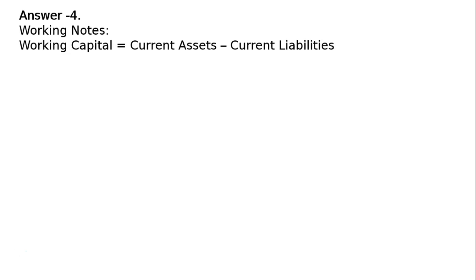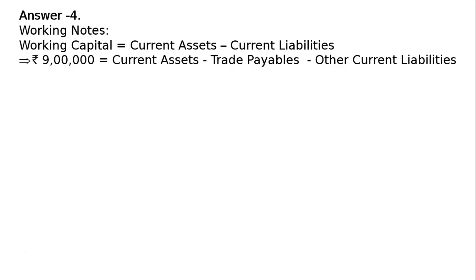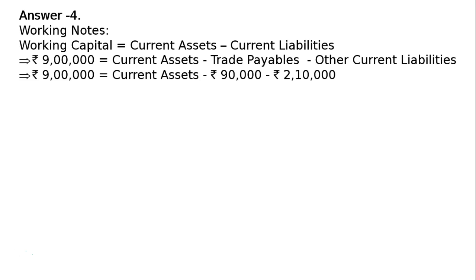Working capital is equal to current assets minus current liabilities. Working capital is given as rupees 9 lakhs. Current liabilities have two parts: trade payables and other current liabilities. Together they form total current liabilities. So: rupees 9 lakhs equals current assets minus rupees 90,000 minus rupees 2 lakh 10,000, which is 3 lakhs.